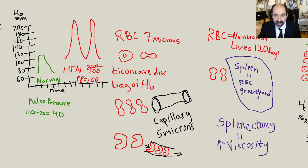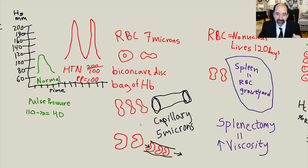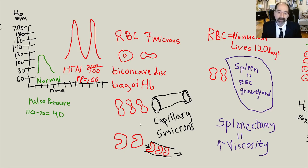A typical red blood cell is about 7 microns — just a little bit bigger than a capillary, which is about 5 microns. Because of that, red blood cells have to deform in order to pass through the capillary. Things that stiffen the red blood cell, such as excessive dietary saturated fat, are going to make it harder for that red blood cell to pass through the capillary, and because of that, blood pressure has to go up.